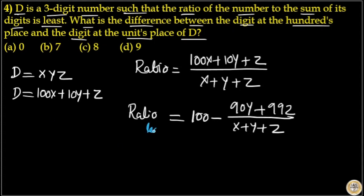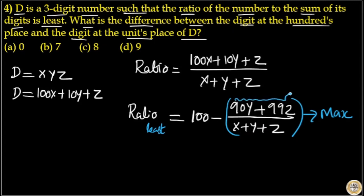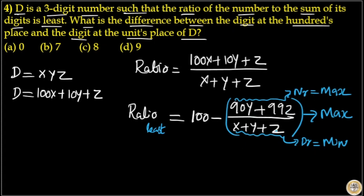The ratio must be least, which means 100 minus this term must be least, so this term should be maximum. To make this term maximum, we need to make the numerator maximum and the denominator minimum. You can see that Y and Z appear in both numerator and denominator.